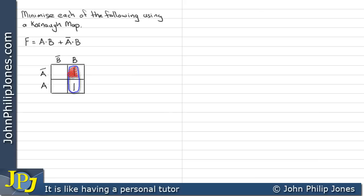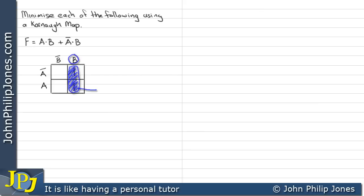If I look at this particular area of the loop, we can see that's in the not A, and this particular area of the loop we can see is in the A. Now, because it's A and not A, we discard those. Here we can see we have the not B — there's none of the loop there, so we discard that. Now, if we look at all of this, we can see it's entirely in B. Therefore, this loop is B. Consequently, we can say that F is equal to B, which means that this expression minimises to B.